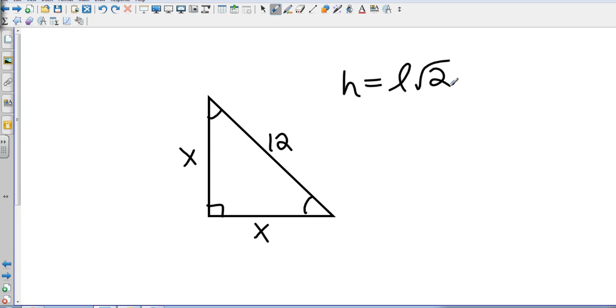We know that the equation originally was hypotenuse equals L times the square root of 2. That's for the hypotenuse. So we know what the hypotenuse is. So now that's going to be 12 equals L times the square root of 2. Obviously, we want to get the leg by itself, so we're going to divide both sides by the square root of 2.